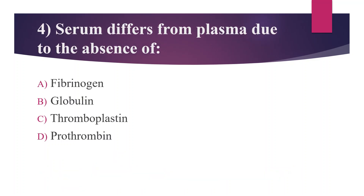Fourth question: serum differs from plasma due to the absence of — Option A: fibrinogen. Option B: globulin. Option C: thromboplastin. Option D: prothrombin. The answer is Option A, fibrinogen.